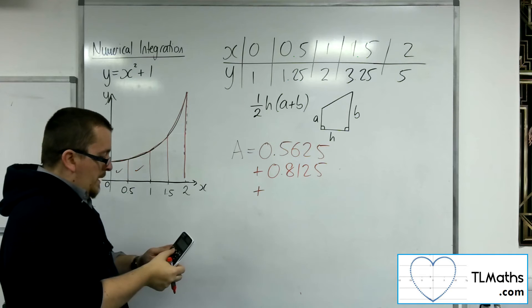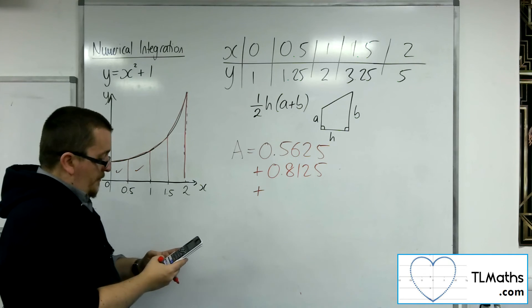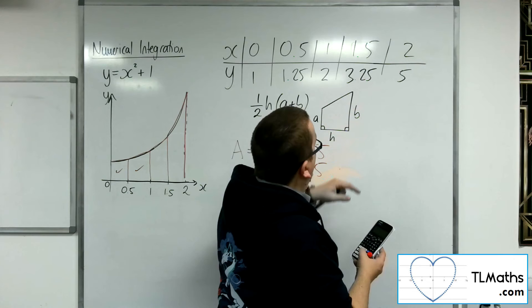The third one, now we've got 1 half times 0.5, and then we've got the first, so 2 plus the second, 3.25.